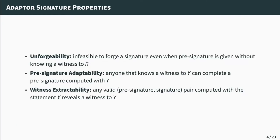Like any other cryptographic primitive, an adapter signature scheme needs certain correctness and security properties. More precisely, an adapter signature needs to provide unforgeability, pre-signature adaptability, and witness extractability. Unforgeability is similar to that in regular digital signature schemes — it is infeasible for an adversary to forge a signature — but here an adversary is additionally allowed to query pre-signatures of its choosing. Pre-signature adaptability means anyone with a valid witness to statement Y can complete a pre-signature computed under the same statement. Witness extractability means any valid pre-signature–signature pair computed under statement Y is sufficient to extract the corresponding witness.